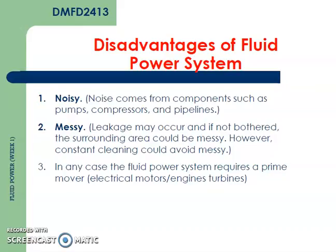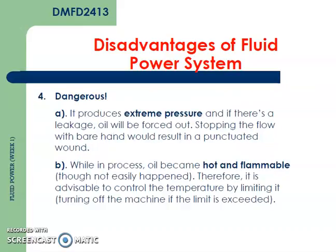In any case, the fluid power system requires a prime mover, which is an electrical motor, engine, or turbine. The fourth disadvantage is risk: it is dangerous because it produces extreme pressure, and if there is a leakage, oil will be forced out. Stopping the flow with bare hands could result in a puncture wound. While in process, oil becomes hot and flammable, though not easily. Therefore it is advisable to control the temperature by limiting it.